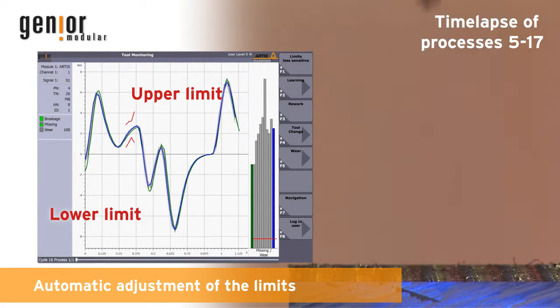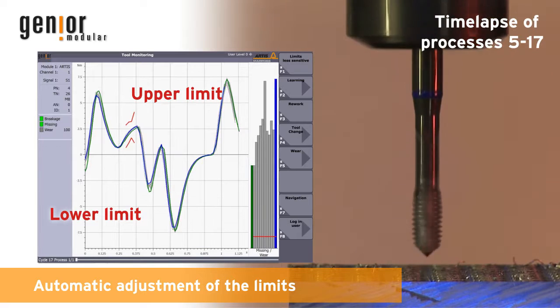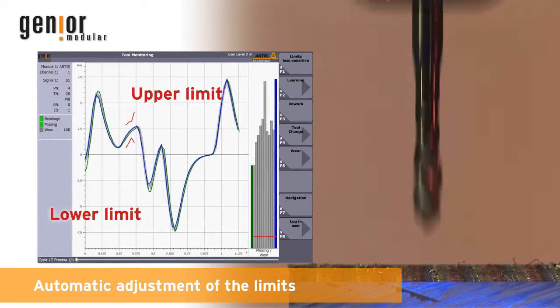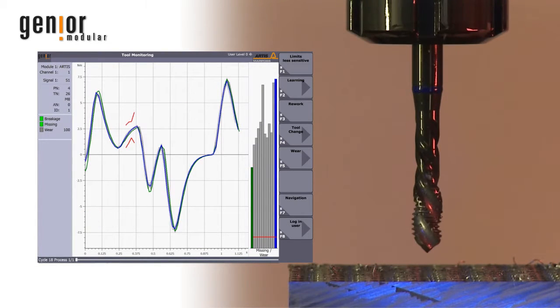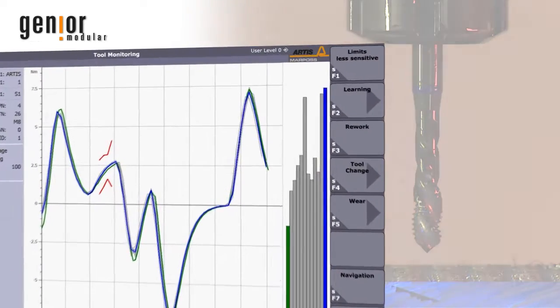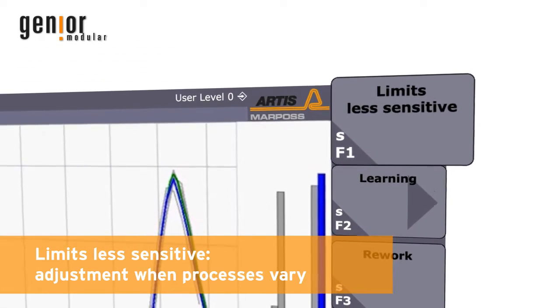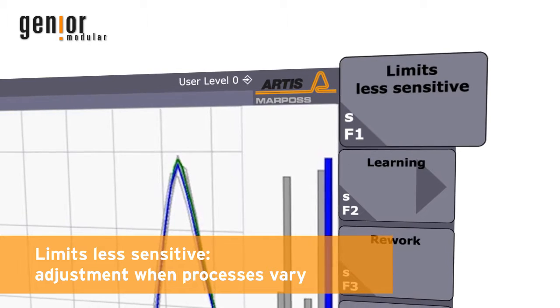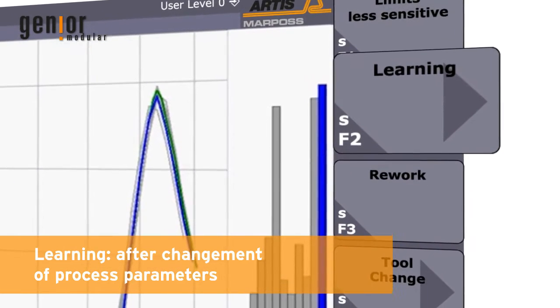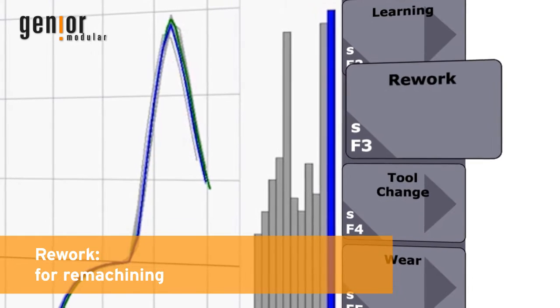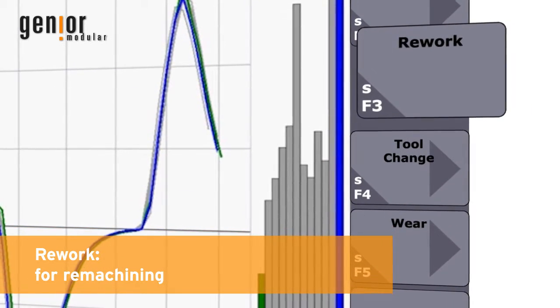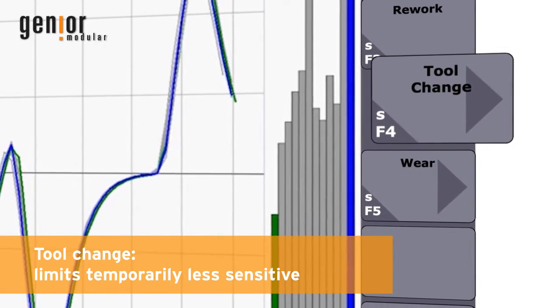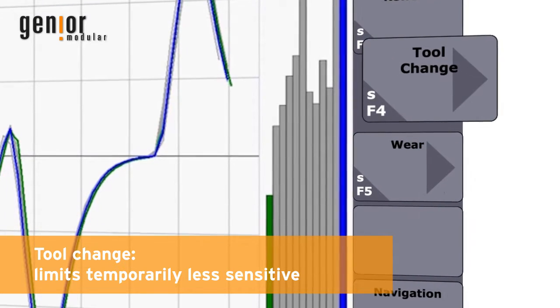The user has several options to reactivate the monitoring following an alarm. This is what the buttons on the right edge of the screen are for. One is used to compensate process deviations, another enables new learning cuts after a change of parameters, one deactivates the alarm limits for a single workpiece, and another sets the limits temporarily less sensitive.